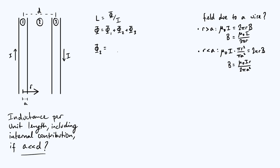Magnetic flux is the surface integral of field B. Flux linkage can be thought of as the number of turns multiplied by the magnetic flux itself. The problem with the term 'number of turns' is it makes you think of coils. Here we've got parallel wires with current going up one wire and down the other, so it's not obvious what we mean by turns. Let's take a moment to think about that.